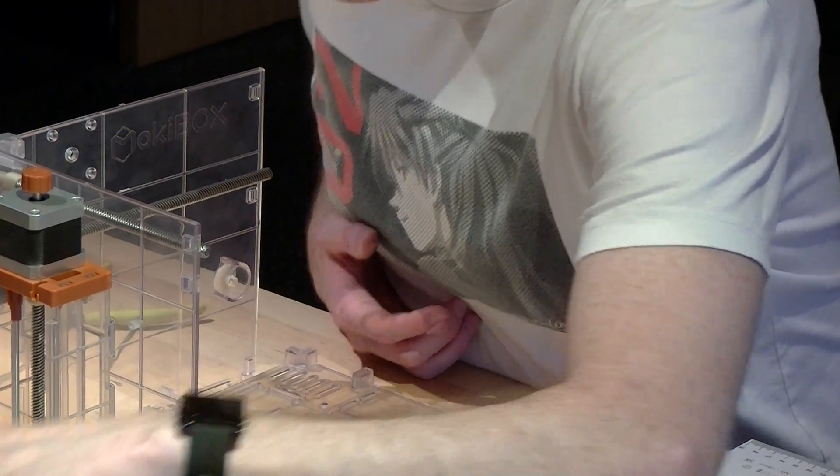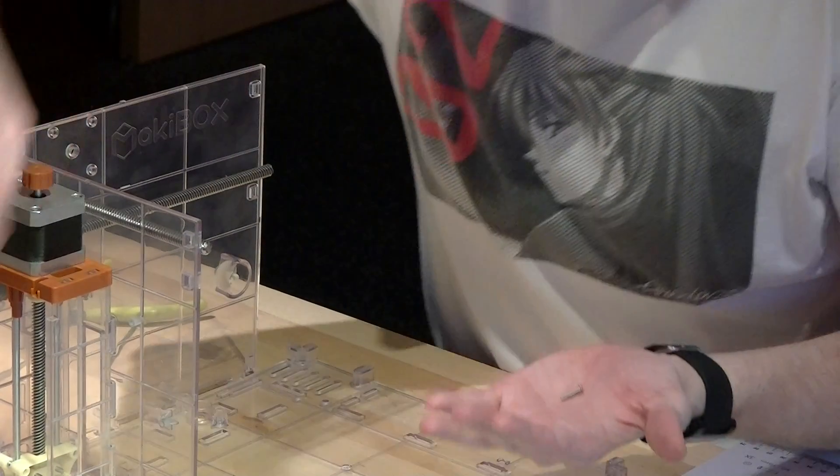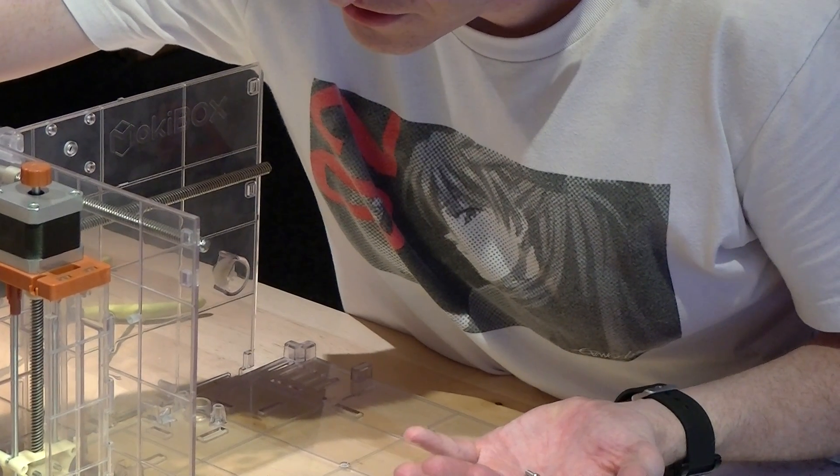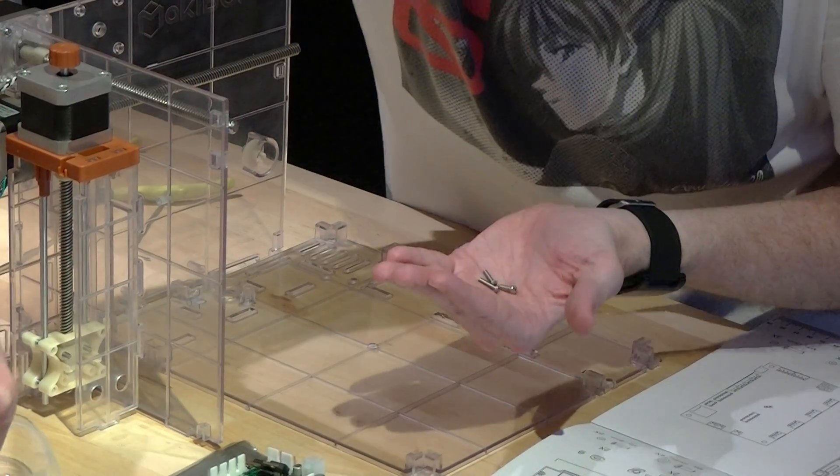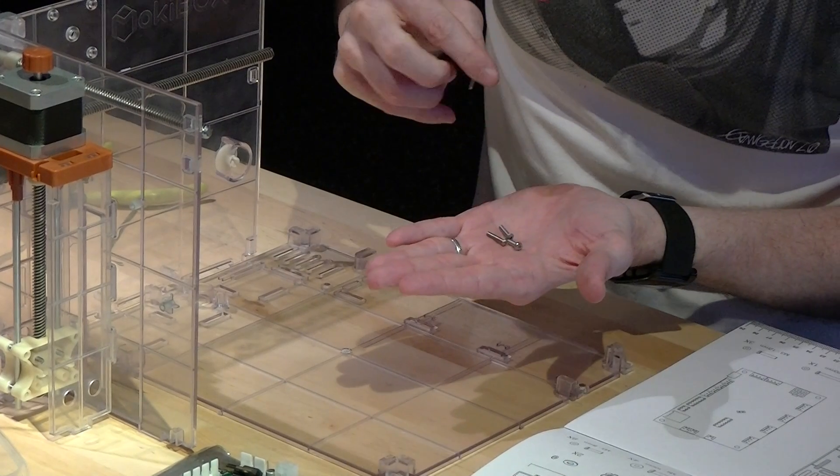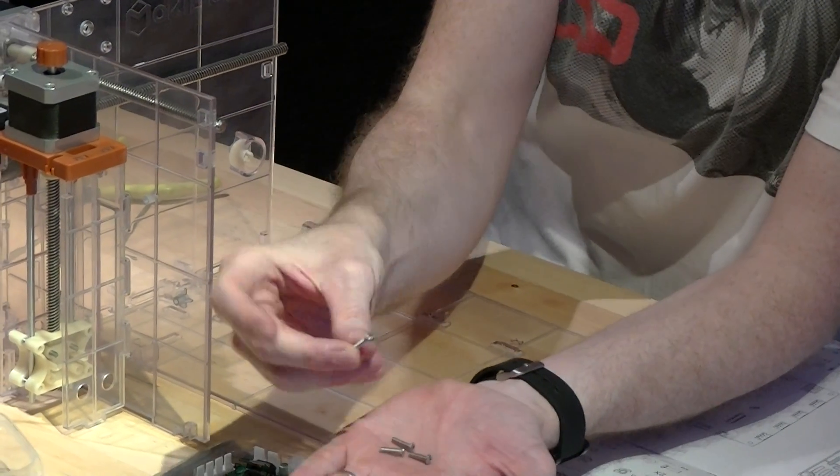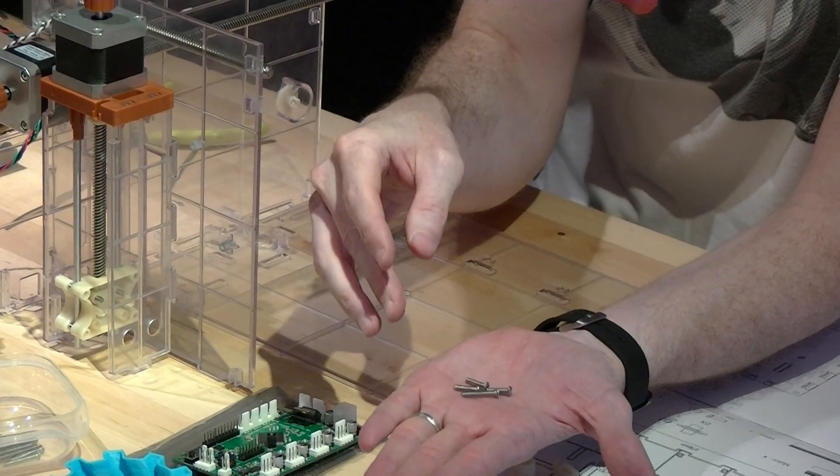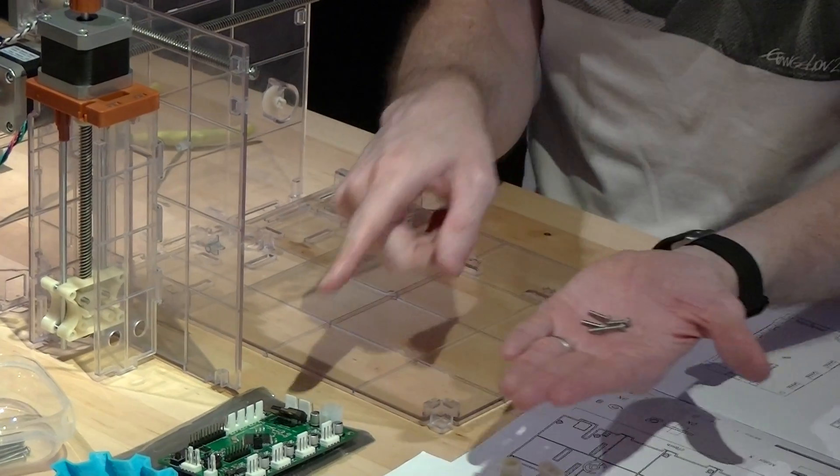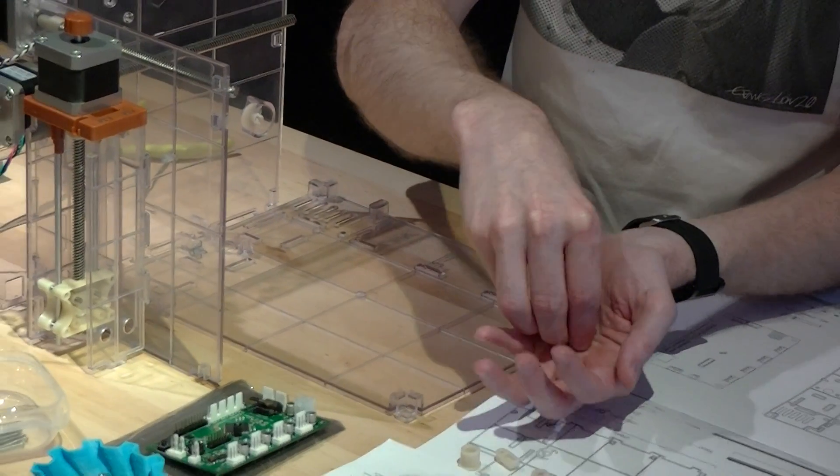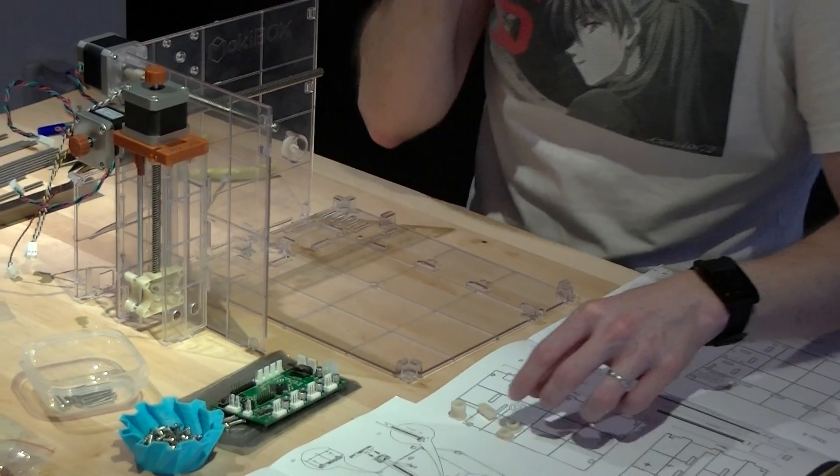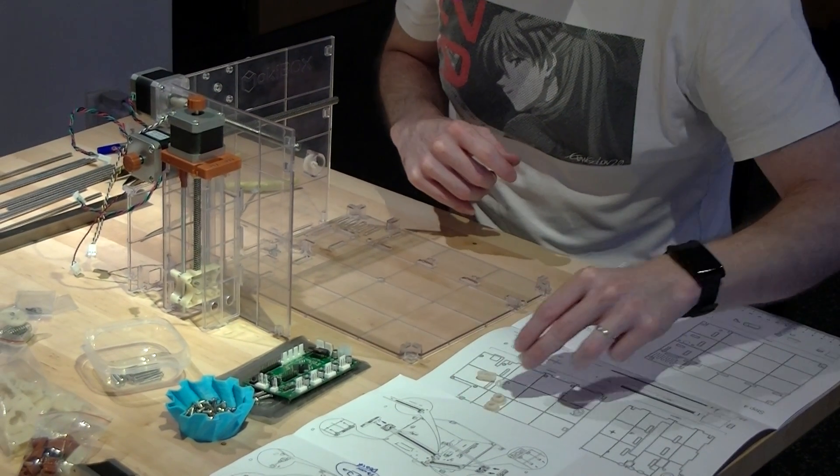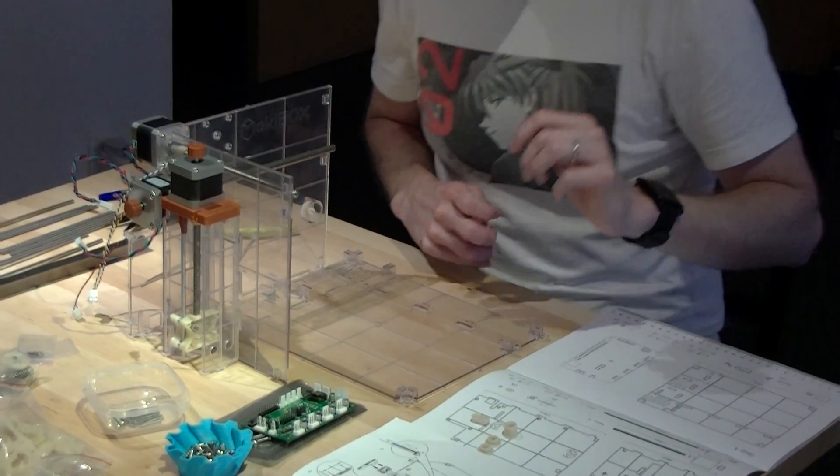From your screw supply, you should have three 12mm M3 screws and then one 20mm M3 screw. Those are for doing the board. So, you can kind of set them aside with the board itself. And that's it for the parts for this.